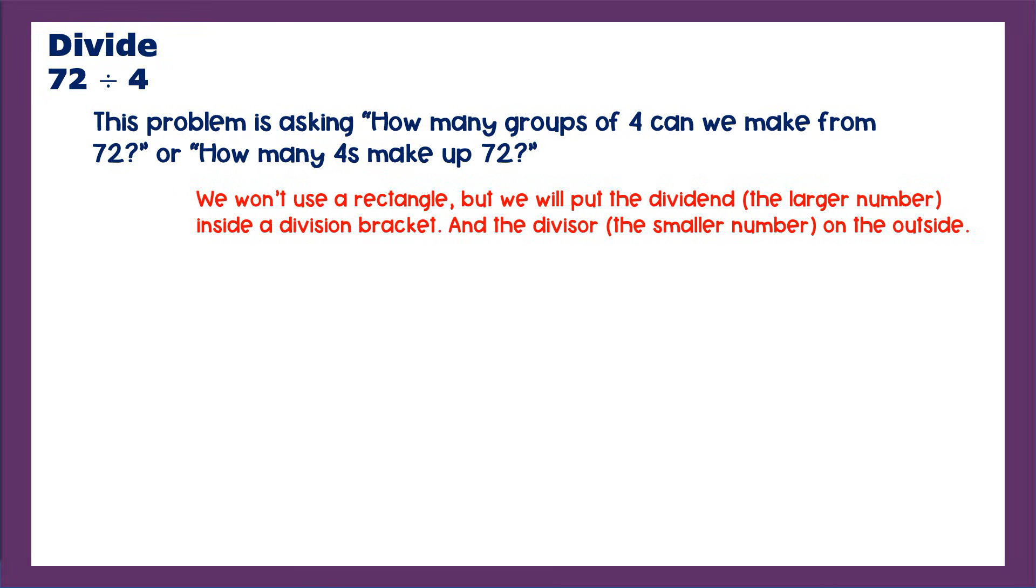We're not going to use a rectangle, but we are going to put the dividend, that larger number, inside a division bracket that kind of looks like an open rectangle. And we are going to put the divisor, the smaller number, on the outside. So here is the dreaded division bracket, but you can think of it as your rectangle, but we are actually going to divide. We're going to put 72, the larger number or the dividend, inside. We're going to put 4, the divisor, on the outside.